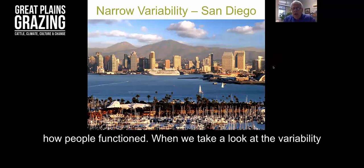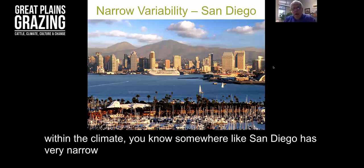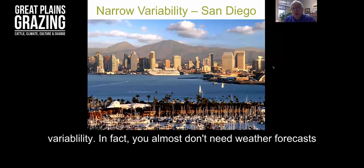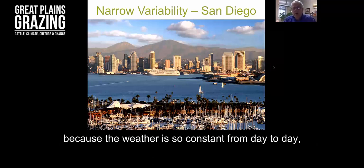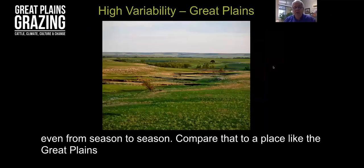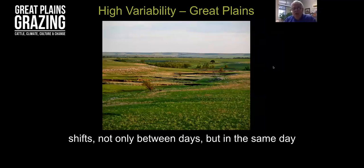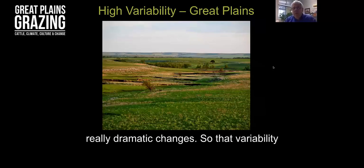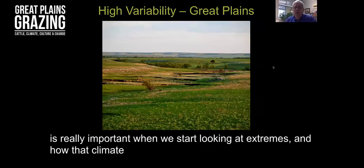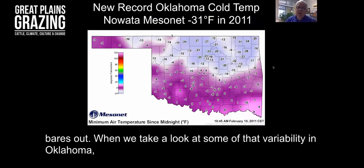When we take a look at the variability within the climate, some place like San Diego has very narrow variability. In fact, you almost don't need weather forecasts because the weather is so constant from day to day, even from season to season. Compare that with a place like the Great Plains, where we have extremely high variability and we can see rapid shifts, not only between days but in the same day, really dramatic changes. That variability is really important when we start looking at extremes and how that climate bears out.